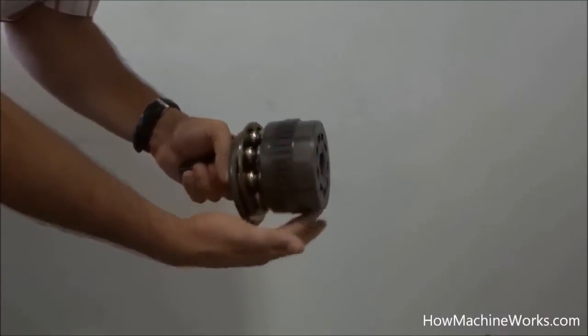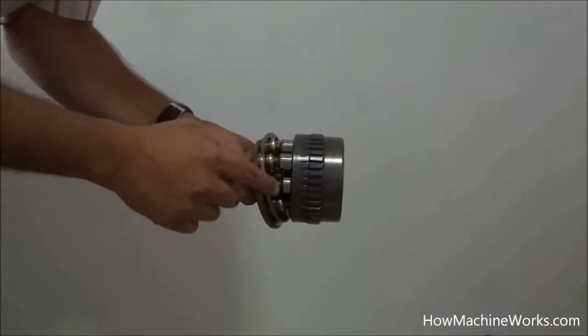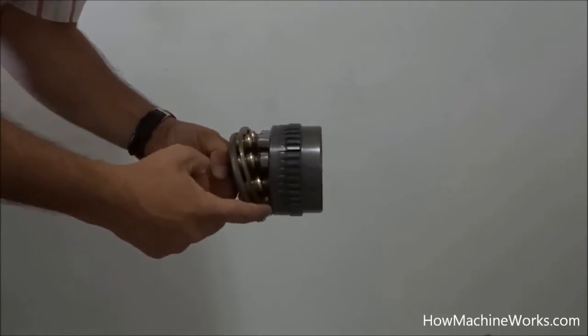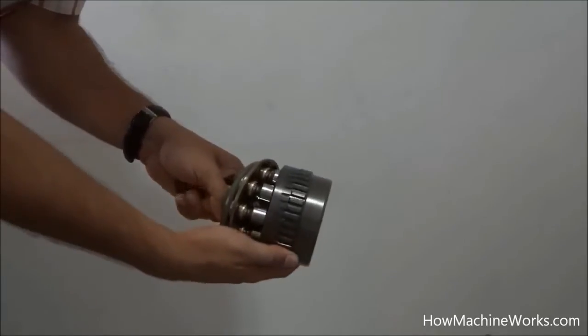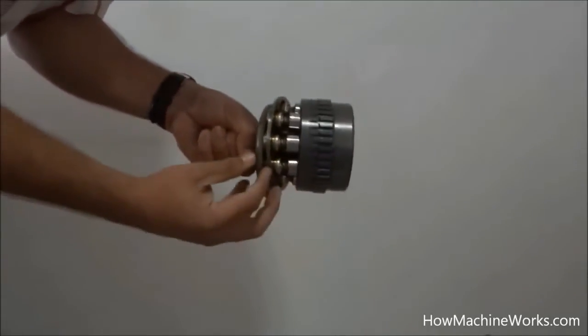So this is a dismantled view of the Axial Flow Piston Pump. Let's identify all the internal components and learn its working. Those are the pistons arranged over there. See the pistons actually protruding outside the cylinder block.